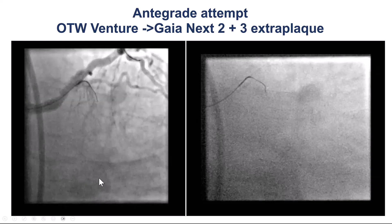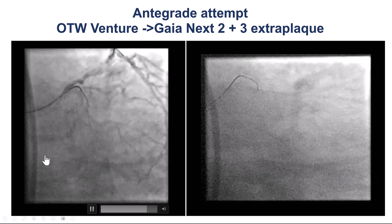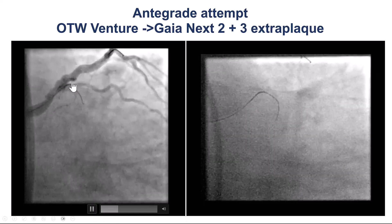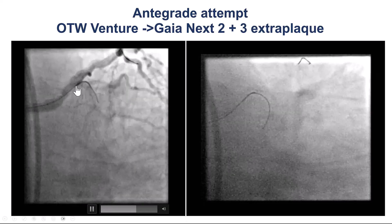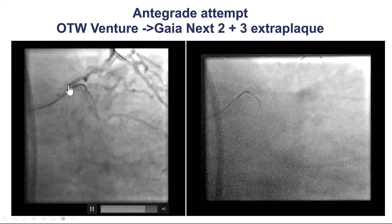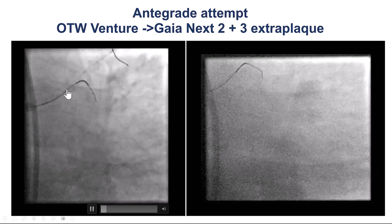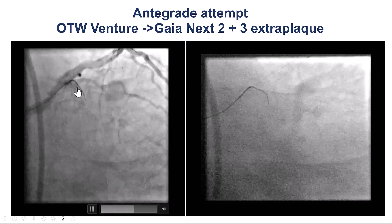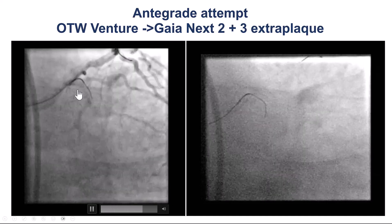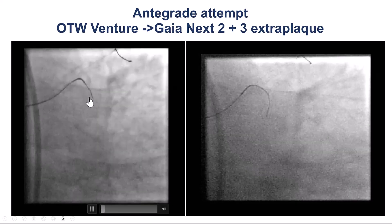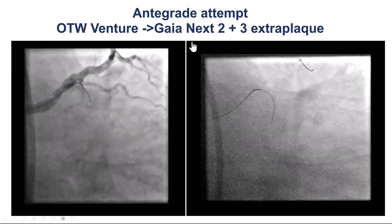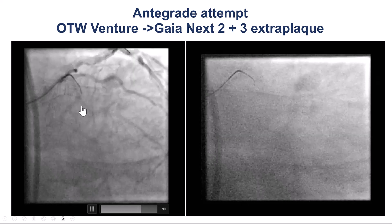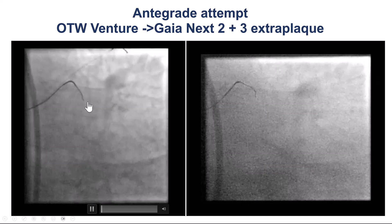We did an attempt for antegrade wiring. This is probably one of the last uses of the over-the-wire venture catheter that has been discontinued, but it is a catheter that can be bent up to 90 degrees, providing very strong support for the guide wire. Unfortunately, we see the guide wire seems to be in the extra-plaque area.